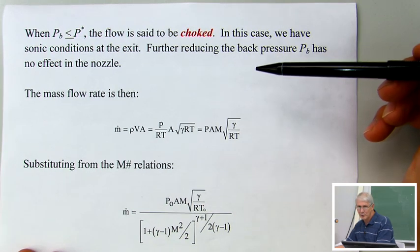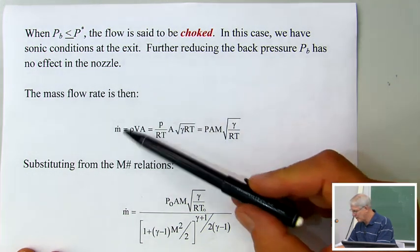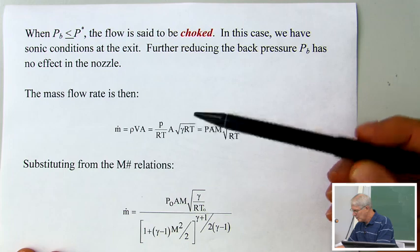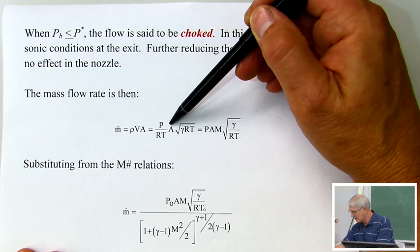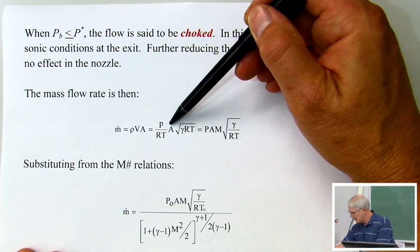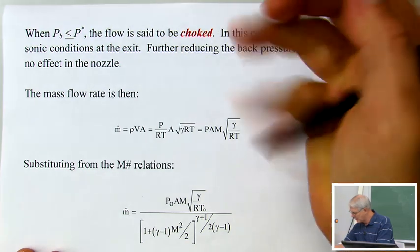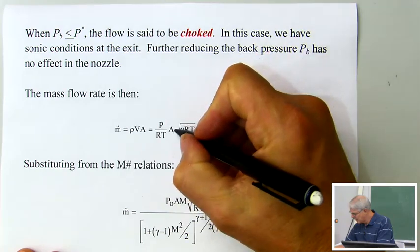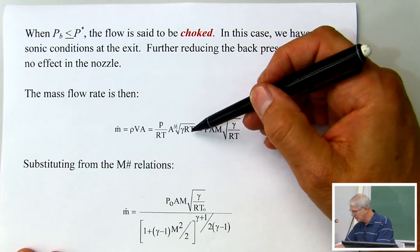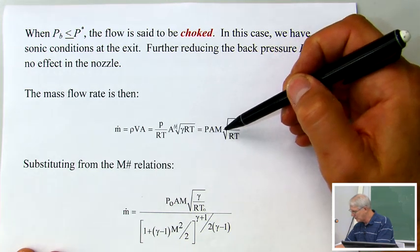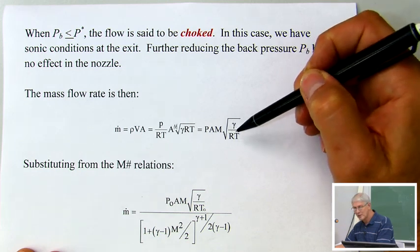One of the things we want to get is the mass flow rate. The mass flow rate is given by rho times V times A. We can write the density as P over RT, and then the velocity term is the Mach number times the square root of gamma RT, which is the speed of sound. If we rearrange that, we have P times A times M times the square root of gamma over RT as our mass flow rate.